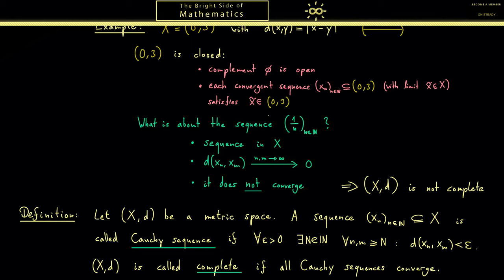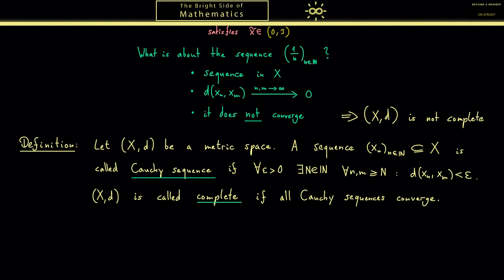And of course you already know how to fix the example above. We could change the set X when we include 0 and 3, then of course now the space is complete. You might already see the general result here because we consider metric spaces coming from the real numbers ℝ with the same metric as ℝ. Therefore, as long as the set X is closed in ℝ, which means in a metric space (ℝ,d) in this case, then what we get out is a complete metric space.